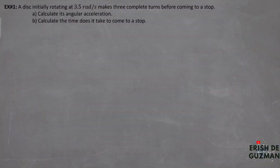Example number one: A disk initially rotating at 3.5 radians per second makes three complete turns before coming to a stop. Letter A: calculate its angular acceleration. And letter B: calculate the time it takes to come to a stop.